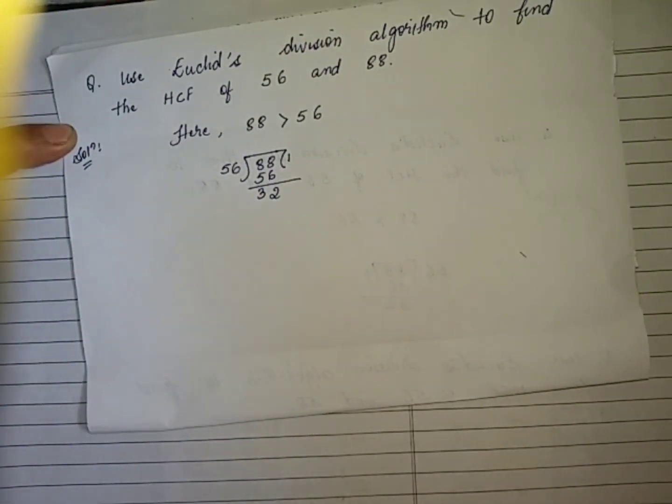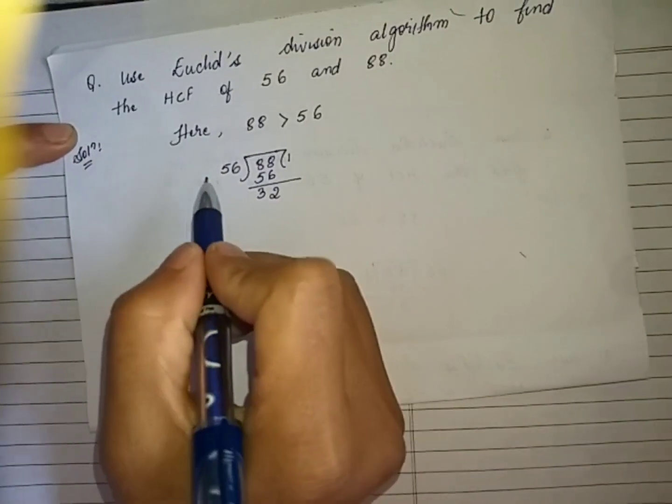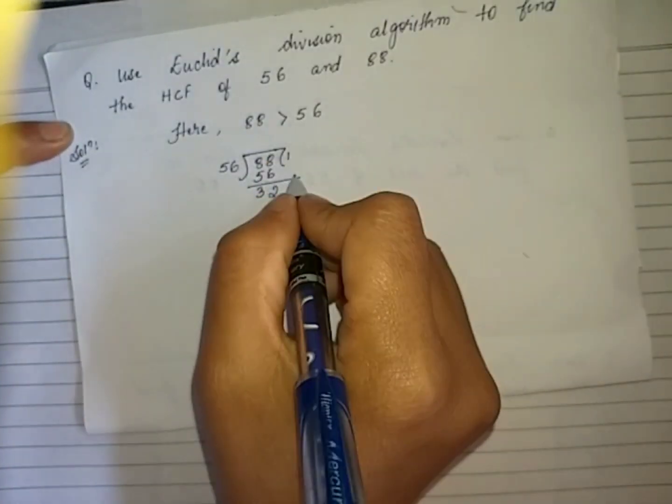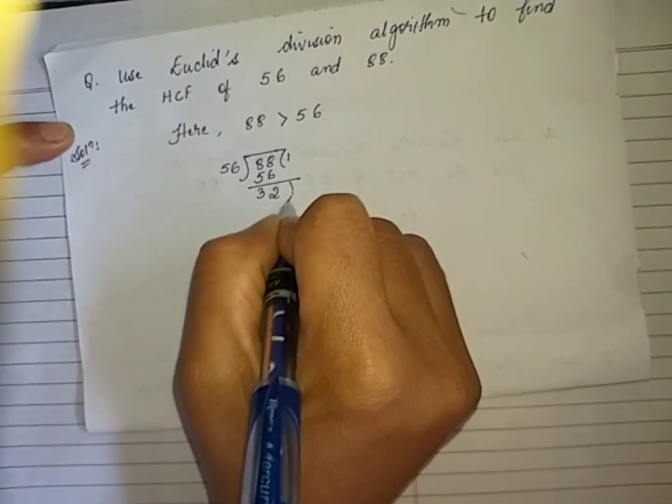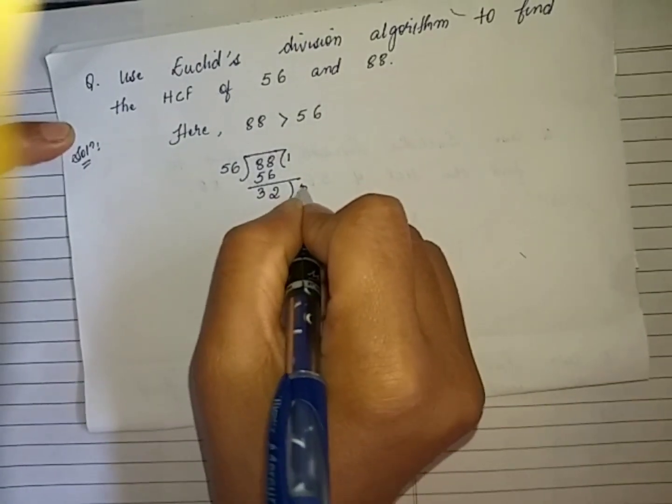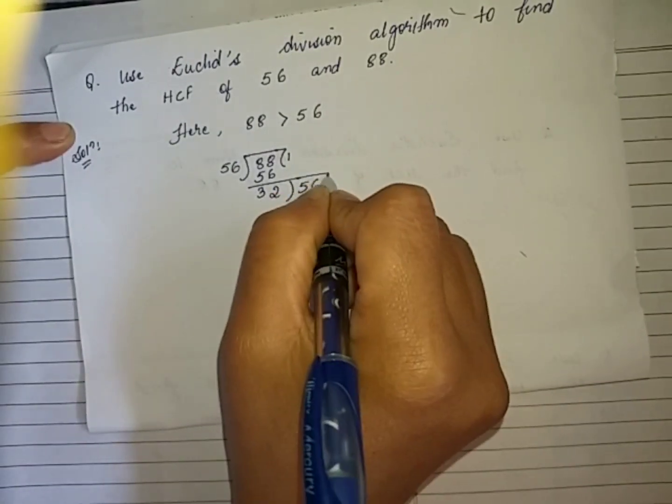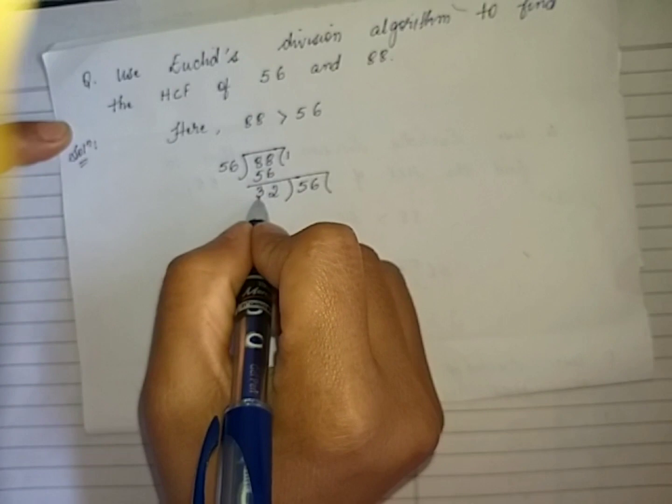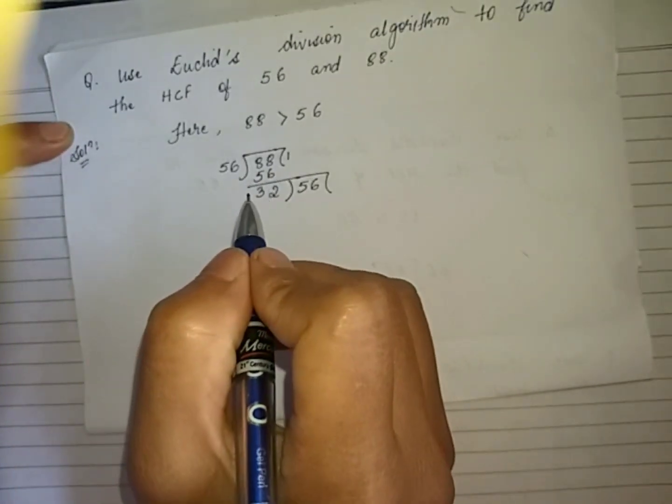How do we proceed? We take the last divisor to be our new dividend and our last remainder to be the new divisor.